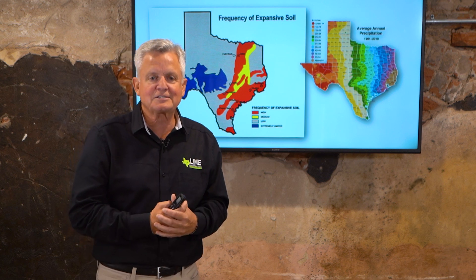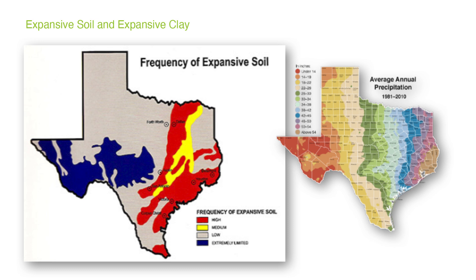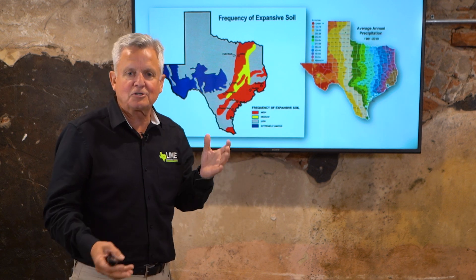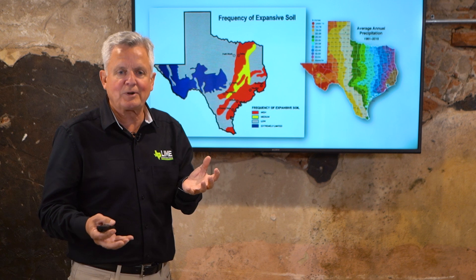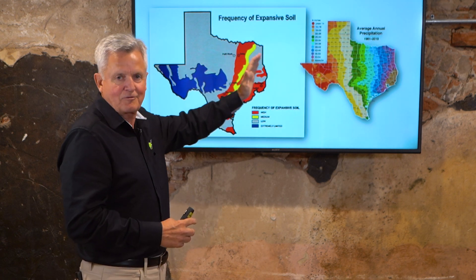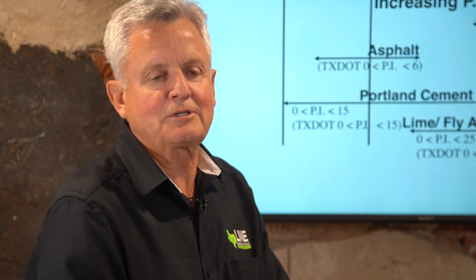This chart shows where expansive clays are in Texas by frequency. Expansive clays can be found anywhere in Texas, but the majority are along the I-35 corridor — from north of DFW all the way down to the Laredo area and over to Houston. Texas rainfall ranges from about 54 inches a year in the Beaumont area down to about 14 inches, so clay is constantly moving. About 80% of Texans live east of I-35, right on top of expansive clays.